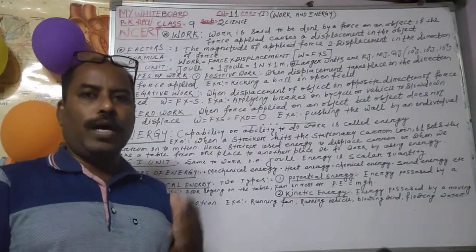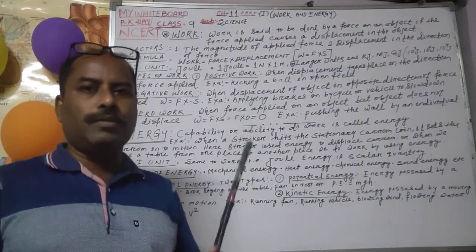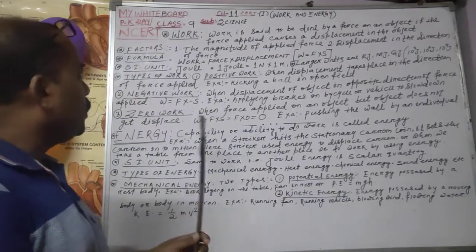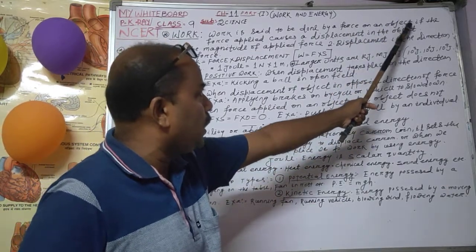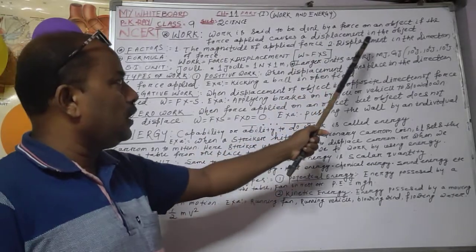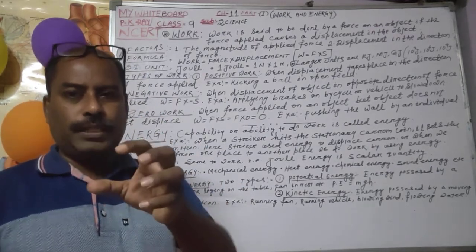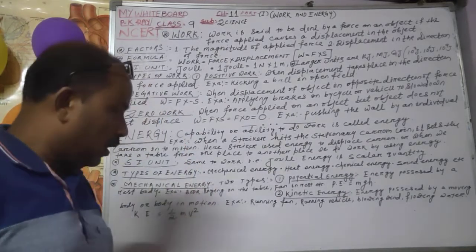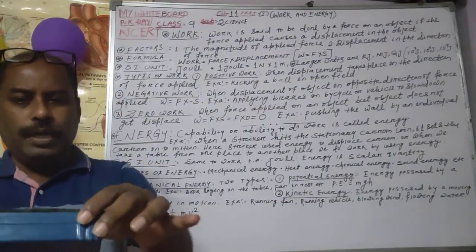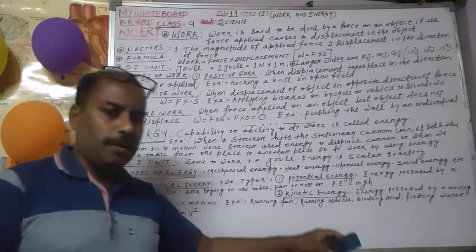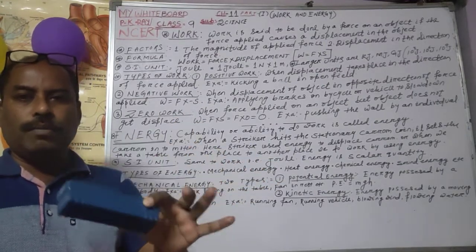We have to start from work. What is work? What do you mean by work? It is a very common word in our everyday life; many times you are using this word. Work is said to be done by a force on an object if the force applied causes a displacement in the object. Suppose when we give a certain force to an object and the object displaces from its position, then it is said to be work done. For example, this is the duster — it was there, and now I am taking it and bringing it here. So I applied some force and I am displacing the object from here to here, so I have done work because I applied force and the object was displaced. That's why work was done by me on this duster.